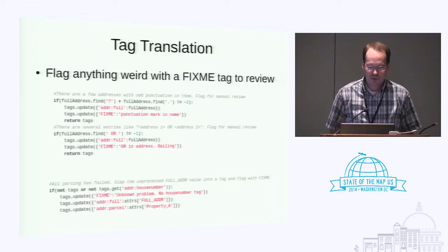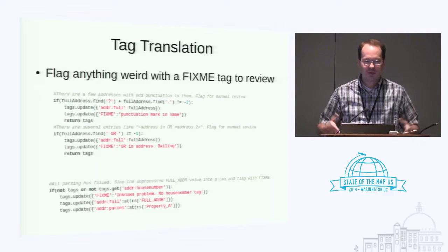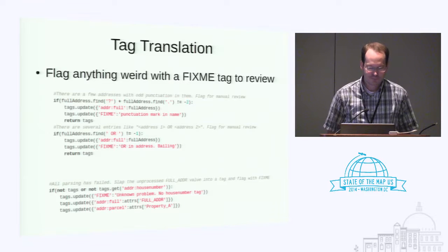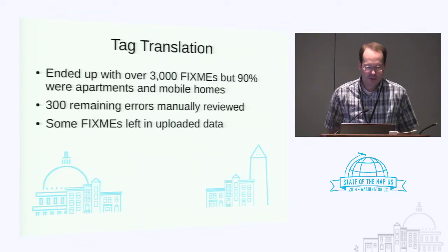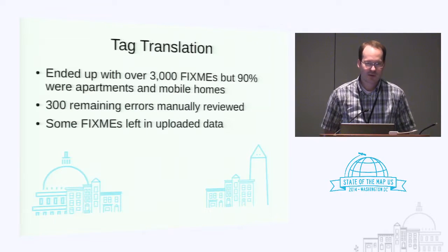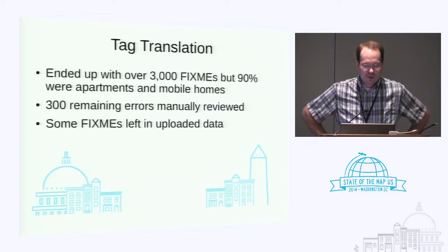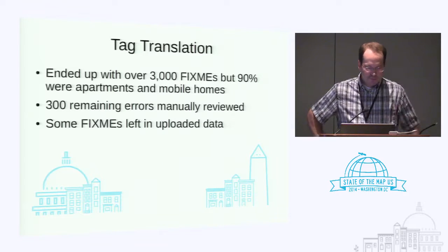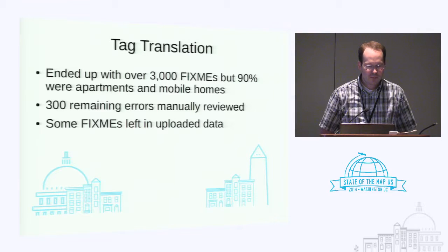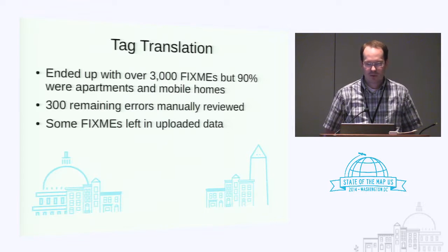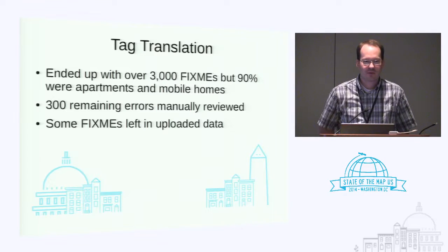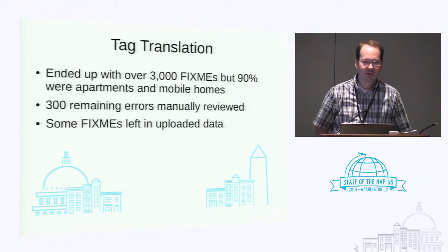So I just tagged those with a fix-me tag, then loaded them up in JOSM and inspected them to figure out what to do. At the very end of the tag conversion process, I had a failsafe: if there wasn't a house number, I basically took all the information from the shapefile, put it into one tag, and added a fix-me to force me to look at that as well. I ended up with over 3,000 fix-me's, but a lot of those I excluded outright because there were apartment complexes and mobile home parks. The remainder I was able to fix in a couple hours of work. There were often clusters of related errors, and once you figure out one you can fix a whole cluster.